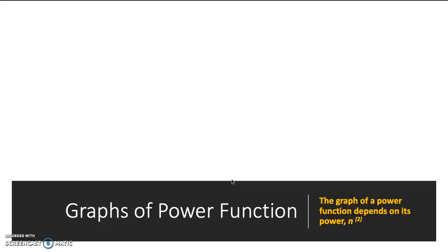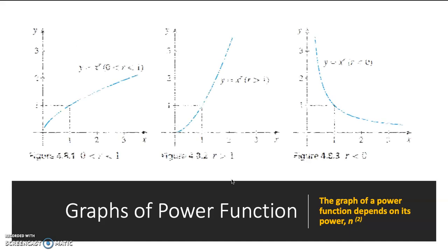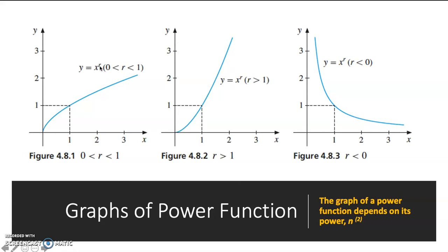Now, the graphical representation of a power function depends on its power. Here, we use r as the symbol of the power. So if the power is between 0 and 1, your function would likely appear this way. And then if the power is greater than 1, it will appear this way, having a positive slope. And if it is smaller than 0, your power function would appear like this.